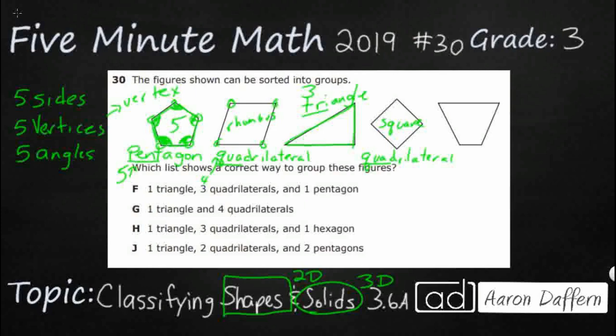And then finally, we have a trapezoid. Now a trapezoid is a quadrilateral that has only one set of parallel lines. So this top and this bottom, those are parallel. But it is also a quadrilateral because it's got four sides.